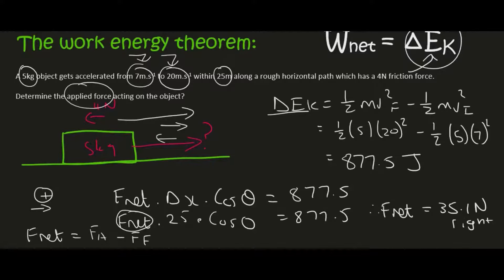Because applied force is this way, friction is that way. So we can then say that 35.1 which is F_net is equal to the applied force minus your friction which is 4 newtons. And so if you take the 4 newtons over, you'll end up with an applied force of 39.1 newtons.